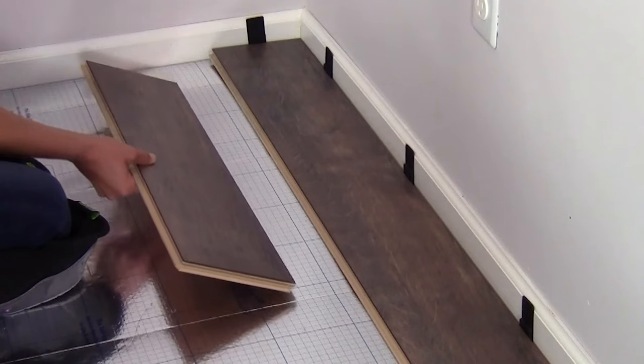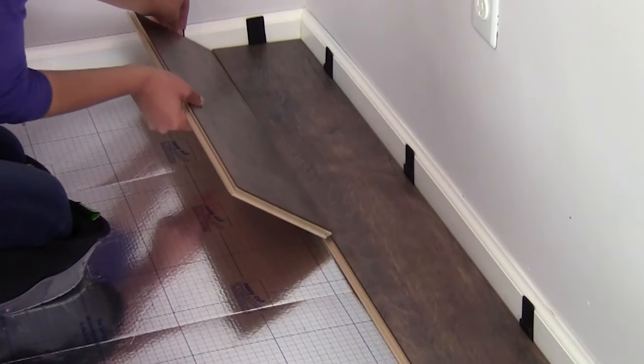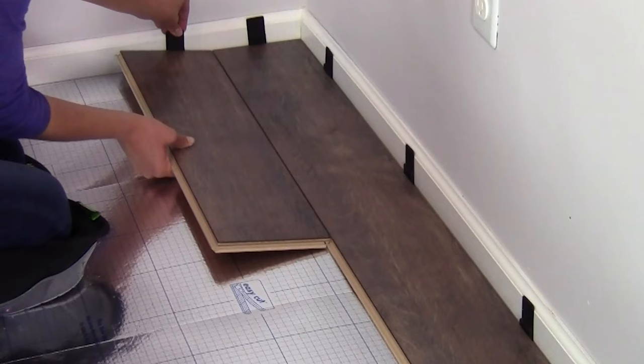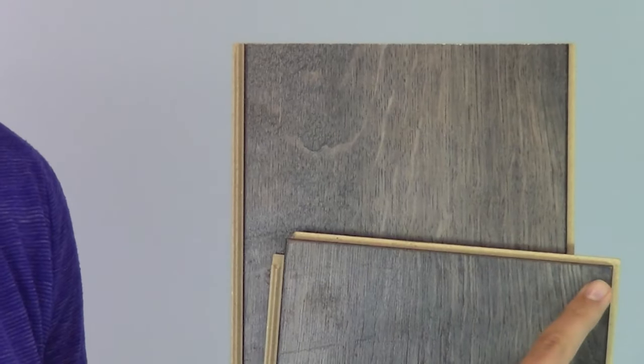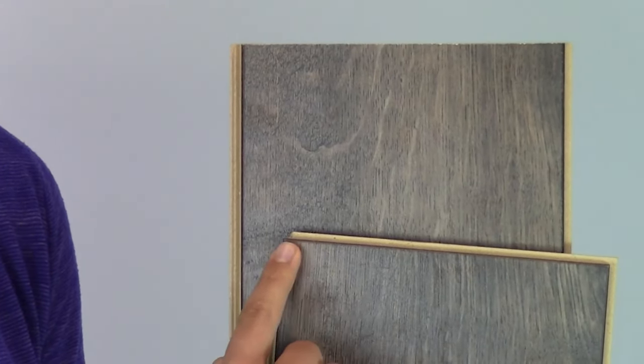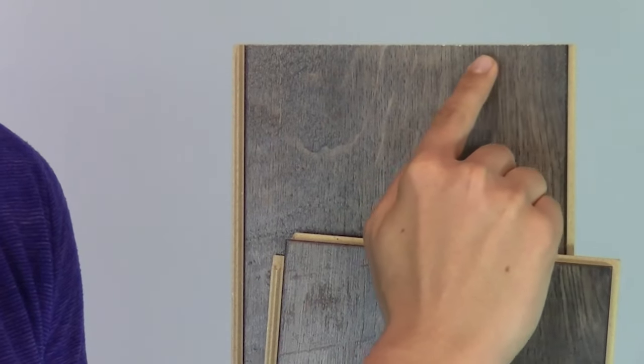Begin the next row with a shorter piece of at least 12 inches so that the joints are staggered. But first remove the tongue from the narrow side that will face the wall so that end can rest flush against the spacers.